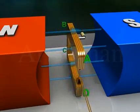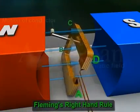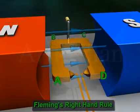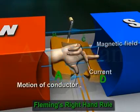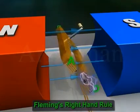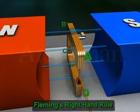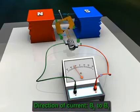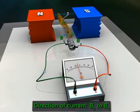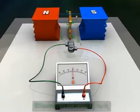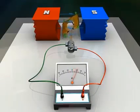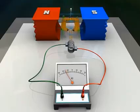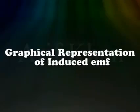During the next half rotation, arm AB moves up while arm CD moves down. Again by Fleming's right hand rule, current will flow in the direction ABCD, that is from B2 to B1 through the galvanometer. Thus the induced current changes its direction every half rotation.